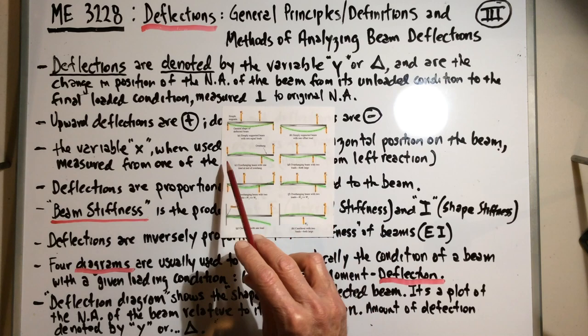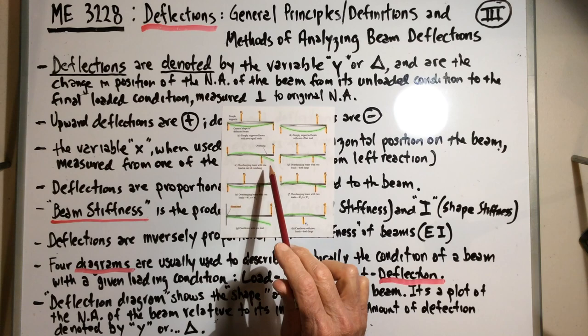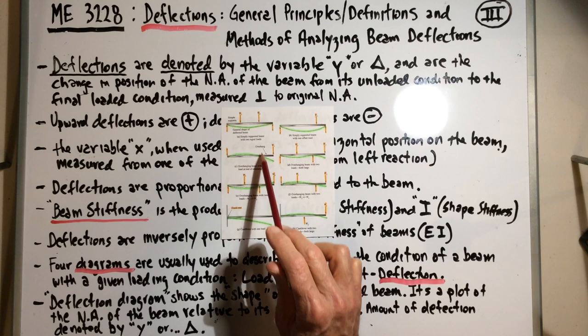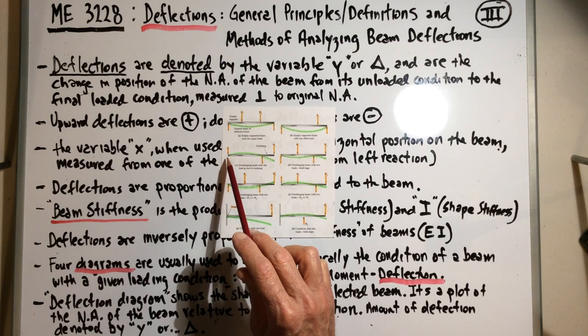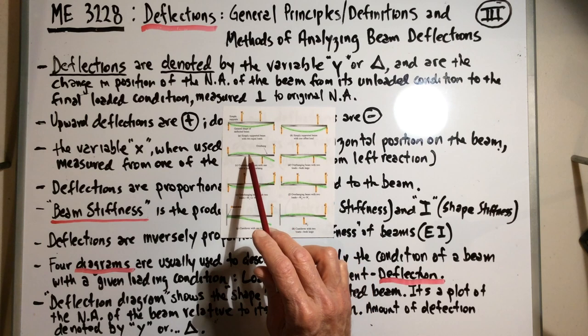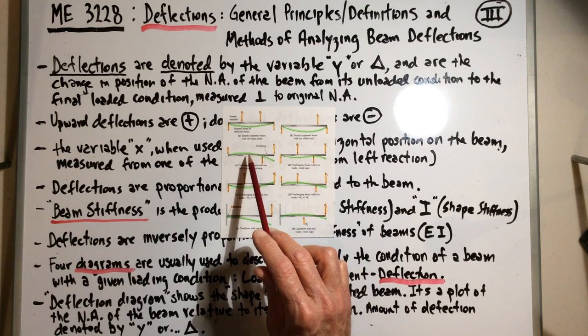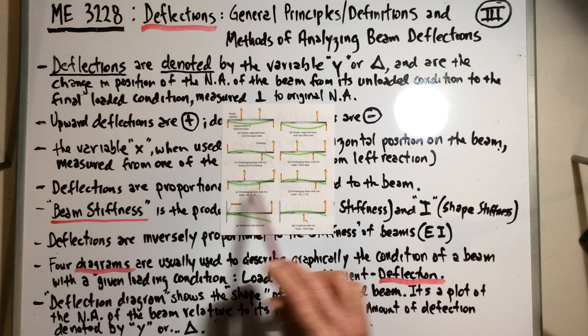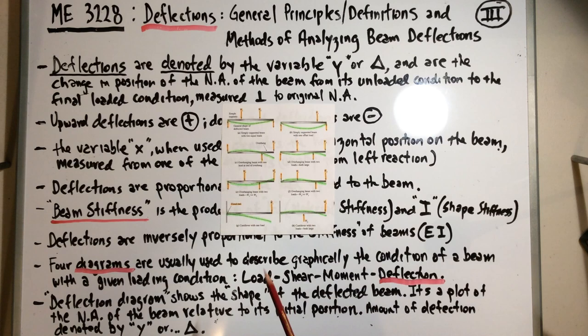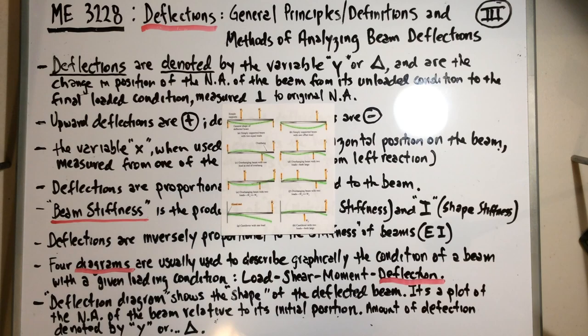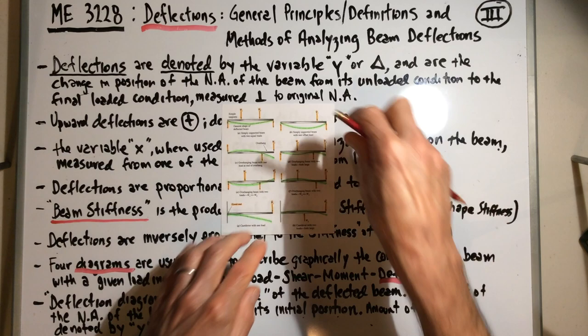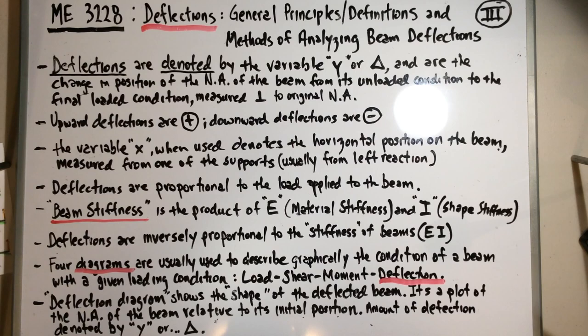Here's an interesting overhang case: there's a wall reaction and another support reaction, with the load at the very end. The beam curve is positive on one side, then shifts down and turns negative, with y-max at the far right end. The cantilevered beam — which you'll likely use in your lab — has the maximum deflection at the very free end of the beam.